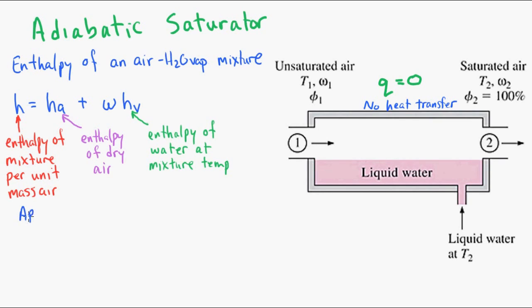Now as an approximation, at low water vapor pressures, HV is approximately equal to HG. So we can rewrite this formula using the saturation pressure, instead of the enthalpy of the water. So that's the enthalpy at the saturation pressure for the given temperature.